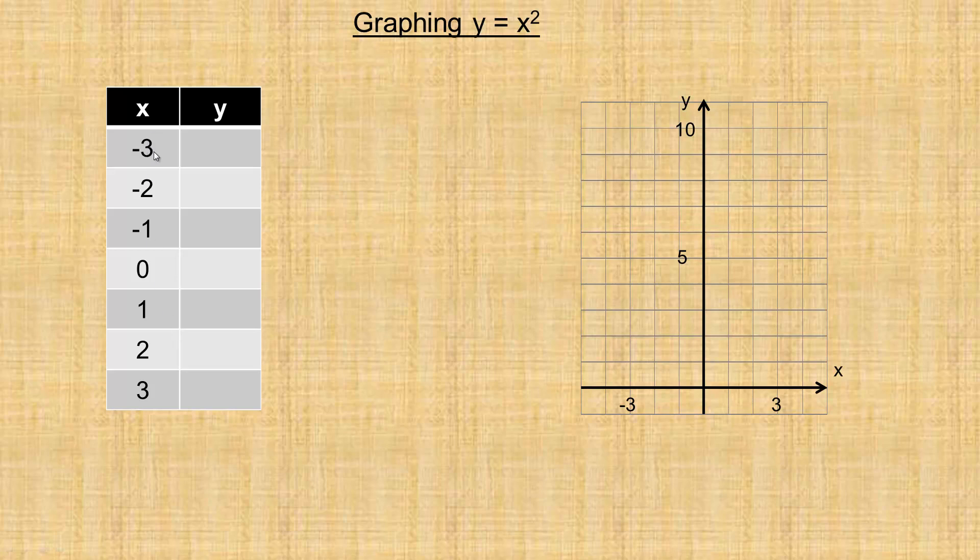Some students will ask, why did you pick these negative 3 to positive 3 numbers? The reason I use those is because that's kind of the interesting part of the graph. I could take numbers below negative 3 or above positive 3, but that's going to give you something around the origin.